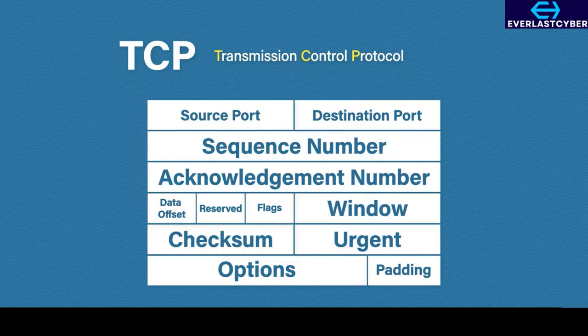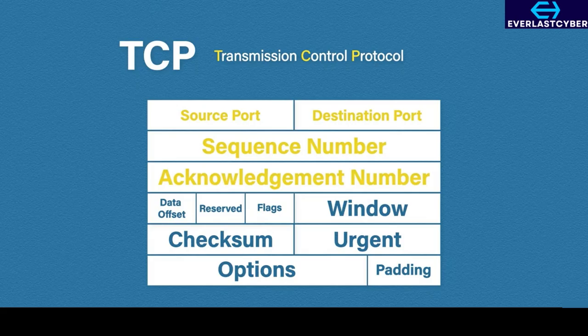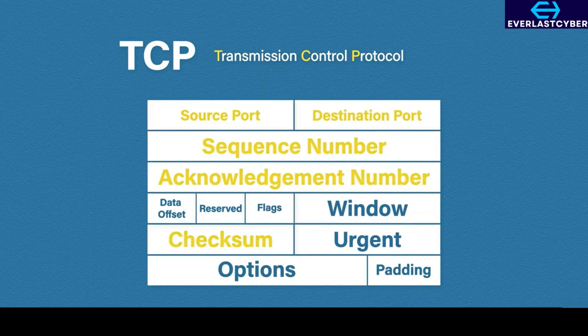A TCP header is added to the application data to create a segment. This is what a TCP header looks like. We have port numbers, which we will cover in another video, the sequence and acknowledgement numbers, and the checksum. For now, there's no need to worry about the other bits of information.